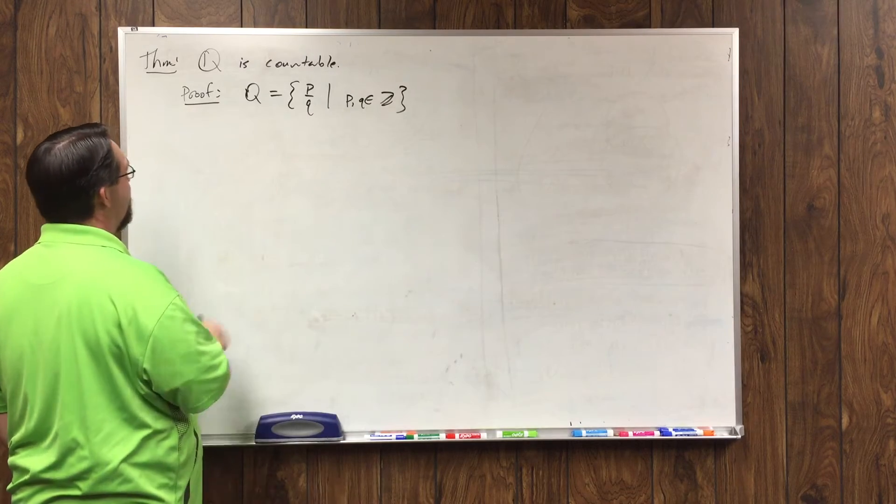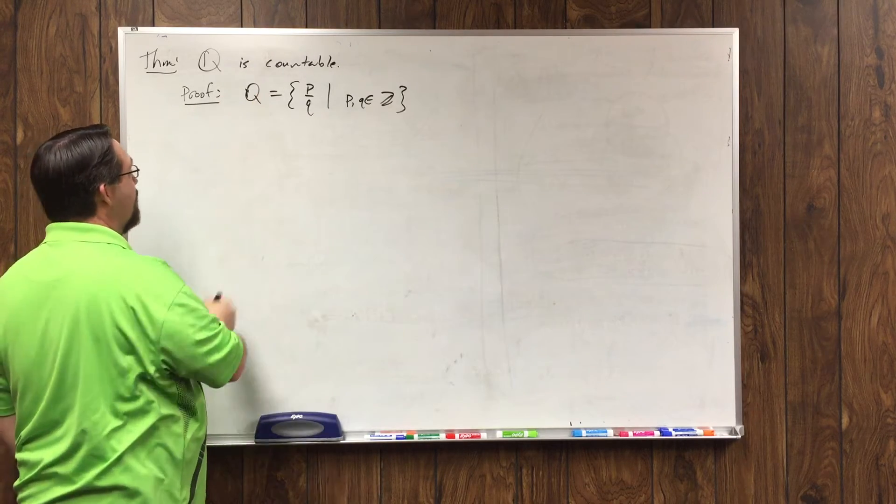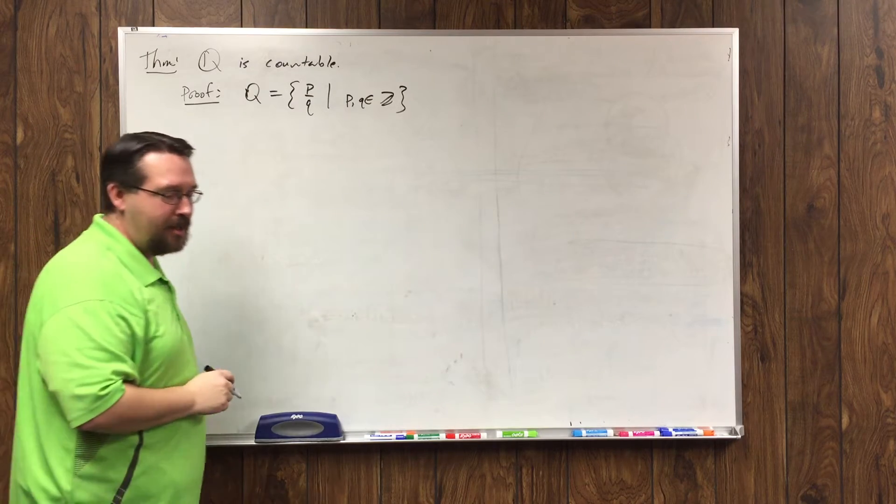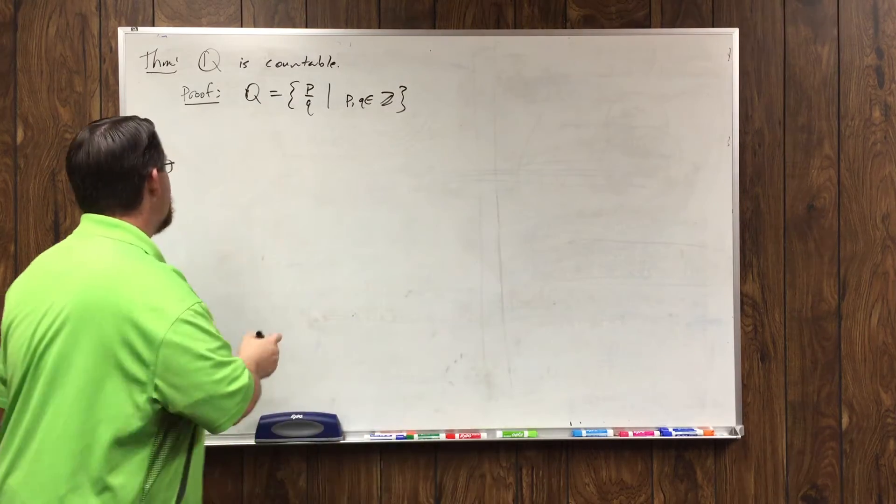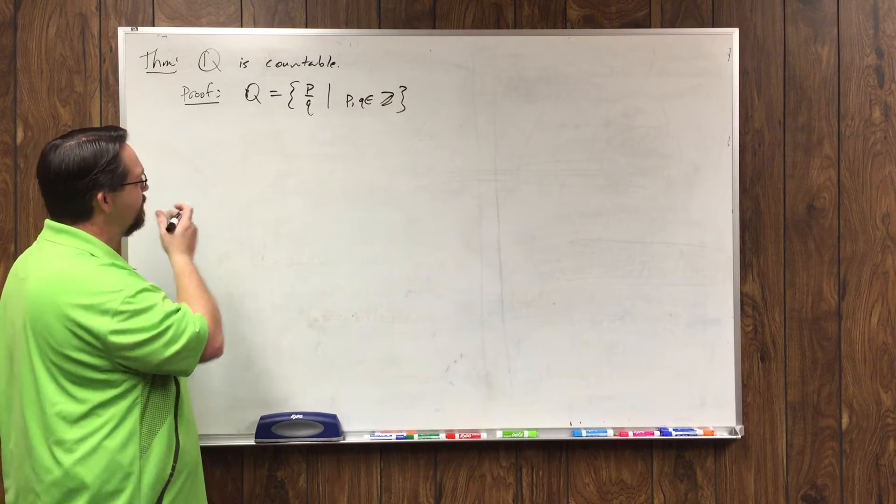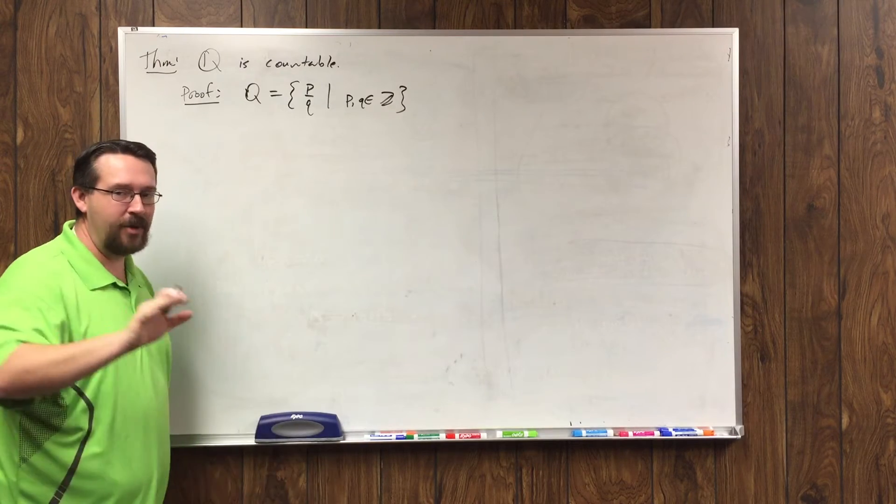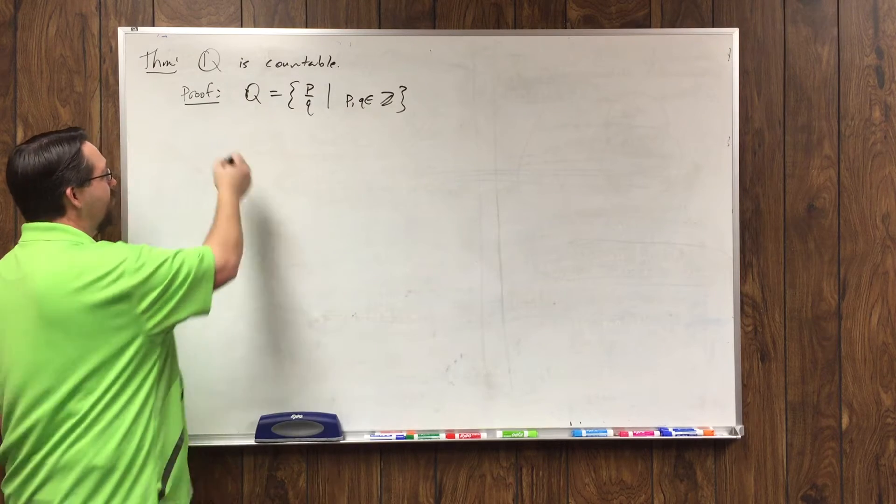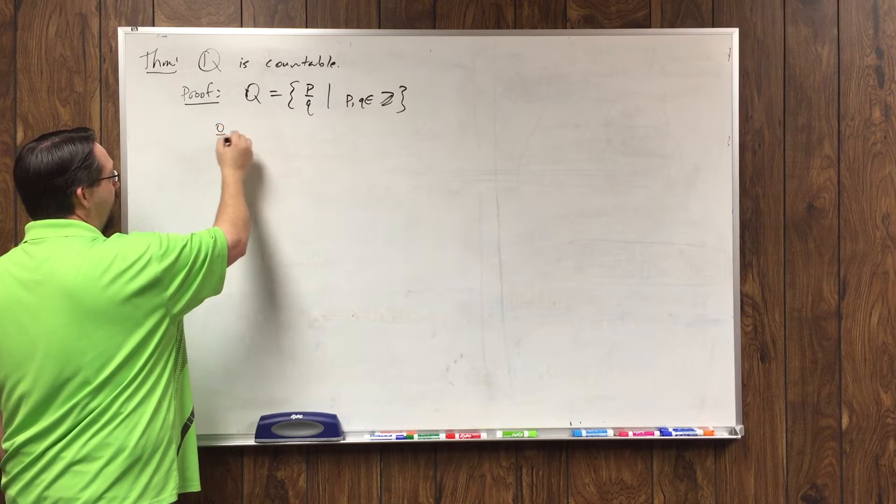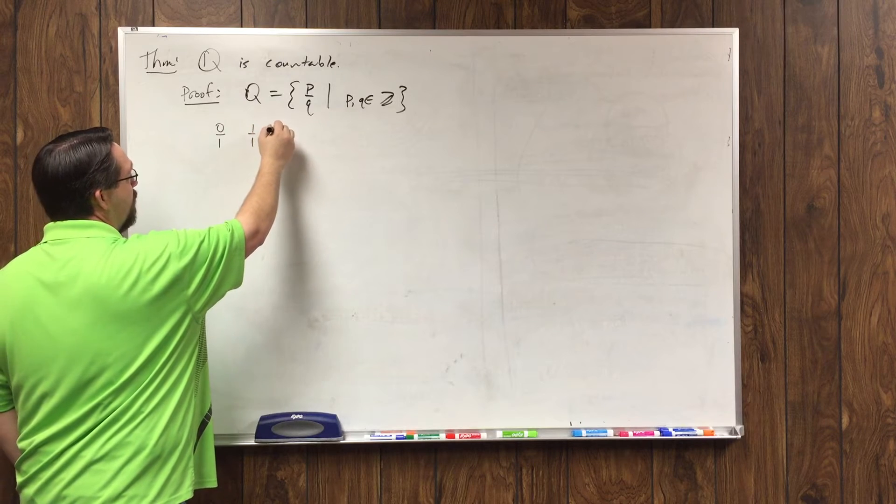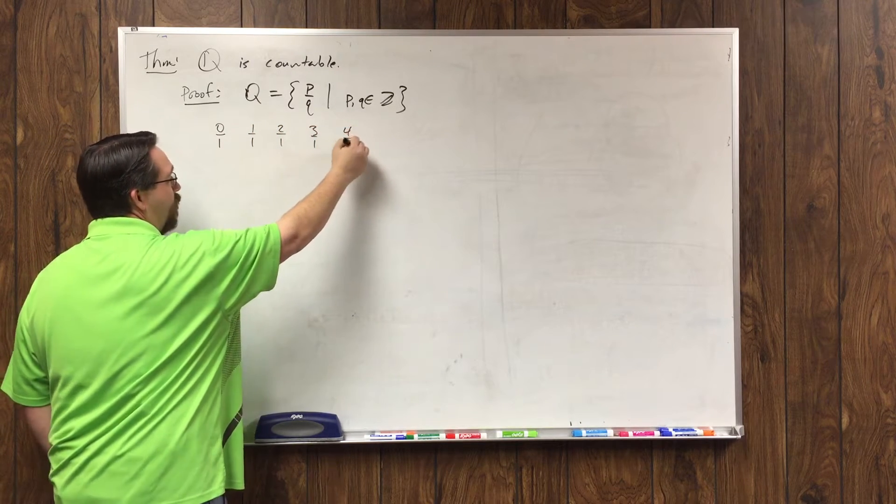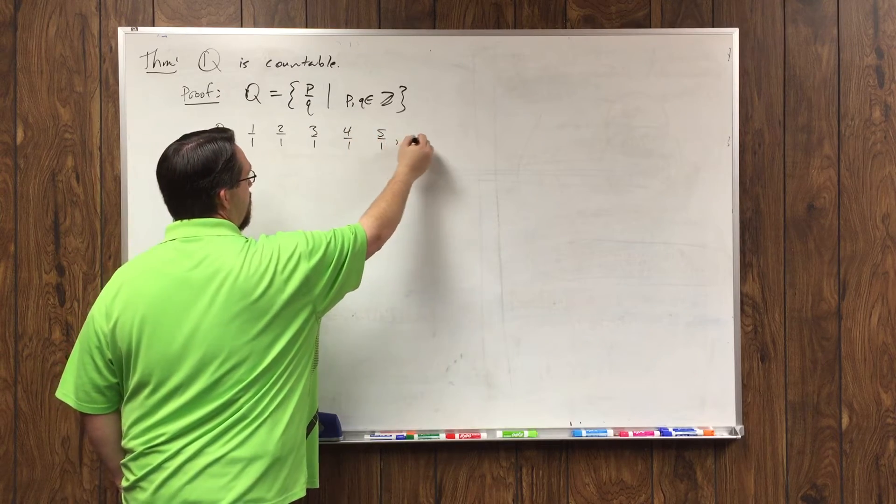All right, so how do we know that it's countable? I'm going to list out all my rational numbers. In fact, I'm going to, I'll do a little bit of hand-waving, but you'll be convinced here in just a minute. Let's start with just positive ones. Okay, 0 over 1, 1 over 1, 2 over 1, 3 over 1, 4 over 1, 5 over 1, and so on.